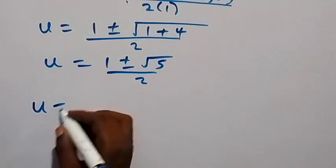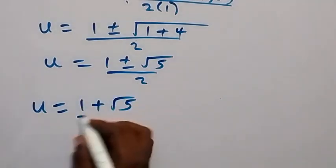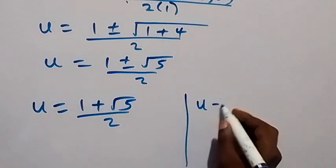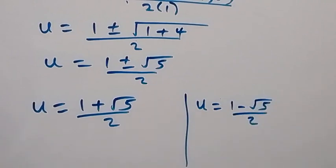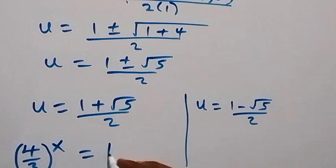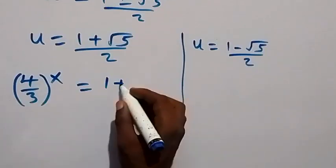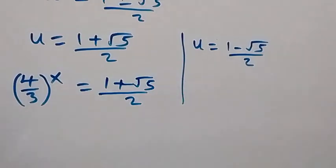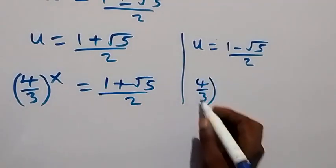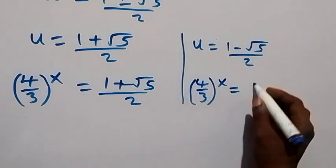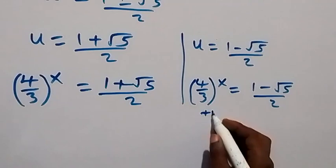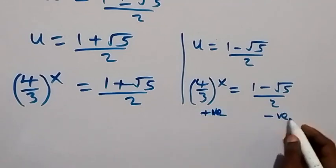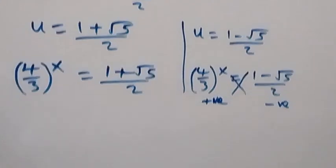We have two possible cases: u equals (1 plus root 5) over 2, or u equals (1 minus root 5) over 2. Recalling that u represents (4/3)^x, the left side gives a positive number, while (1 minus root 5)/2 is negative — so that case is not possible.